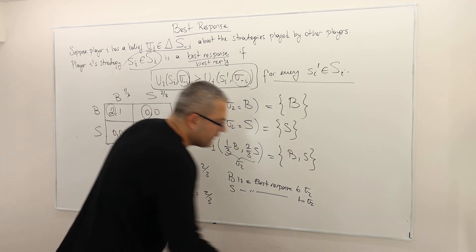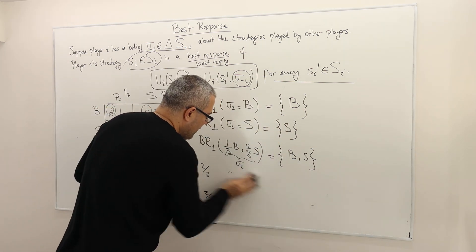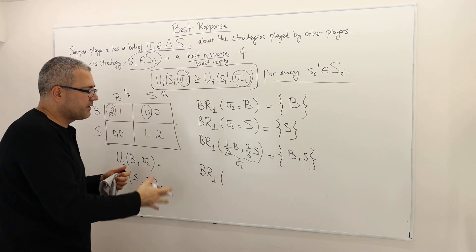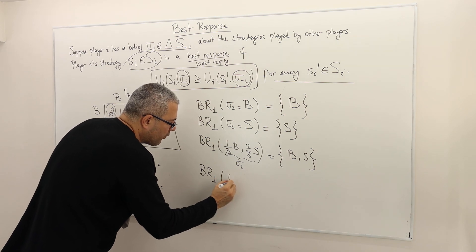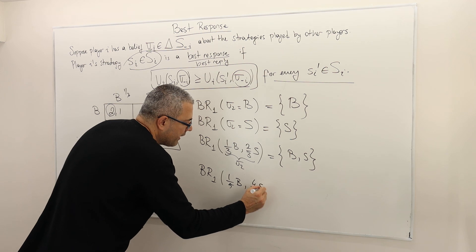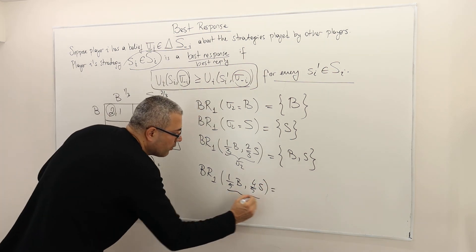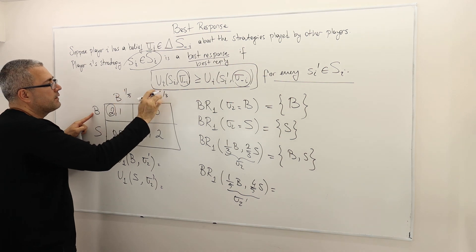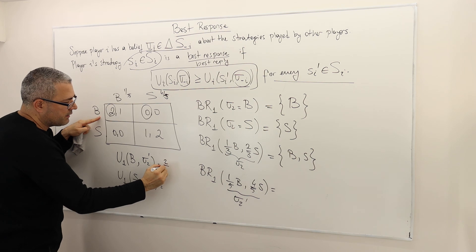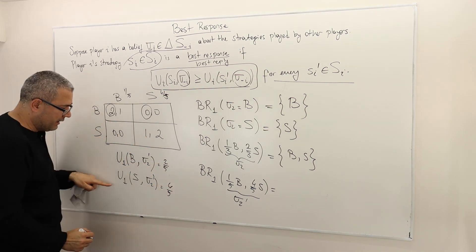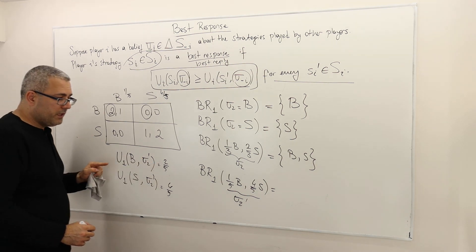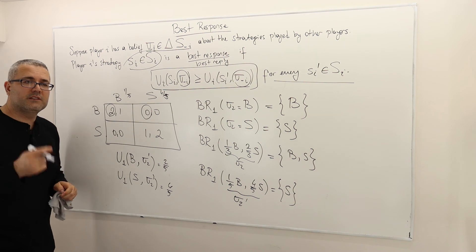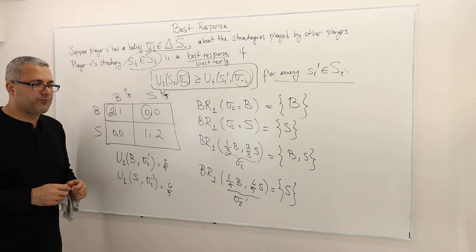Let's do one more exercise. Suppose the best response to sigma-2-prime equals one-fifth B and four-fifths S. We calculate the expected payoffs: playing B gives two times one-fifth equals two-fifths, and playing S gives one times four-fifths equals four-fifths. Clearly four-fifths is higher than two-fifths, so the best response is S. B is not a best response because it yields a lower payoff. So I think you got the idea — that's it for best response.